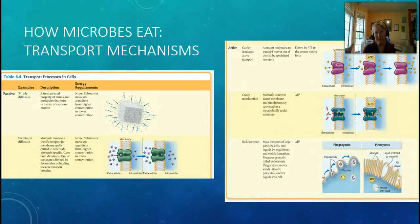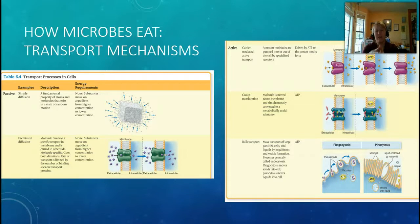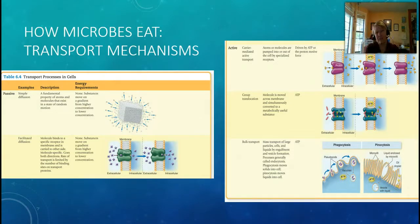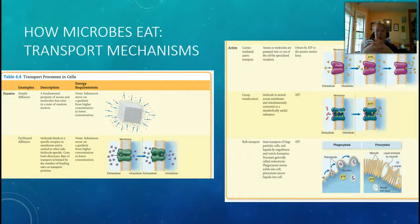In facilitated diffusion, the molecules are too big to simply diffuse. The same principles apply — there's a high concentration outside the cell and not much inside — but because the molecules are so big, they have to be transported across the membrane via a protein. You can see that illustrated on the left-hand side.